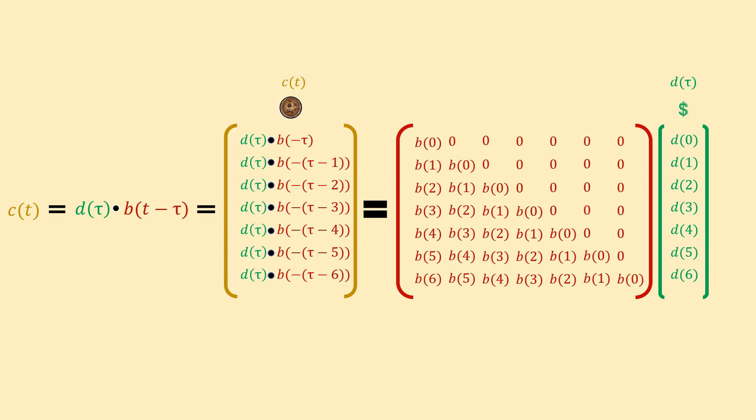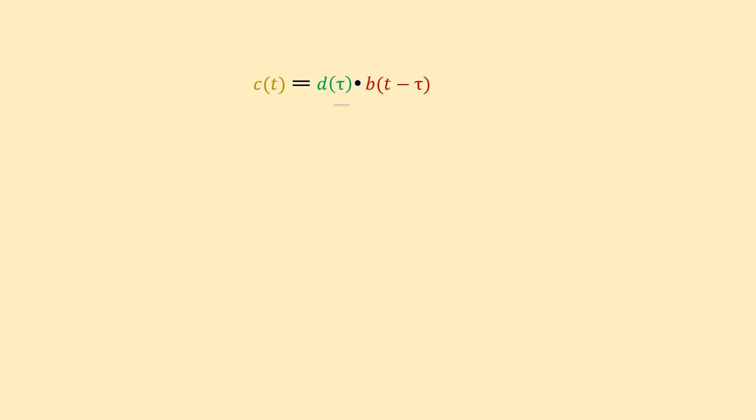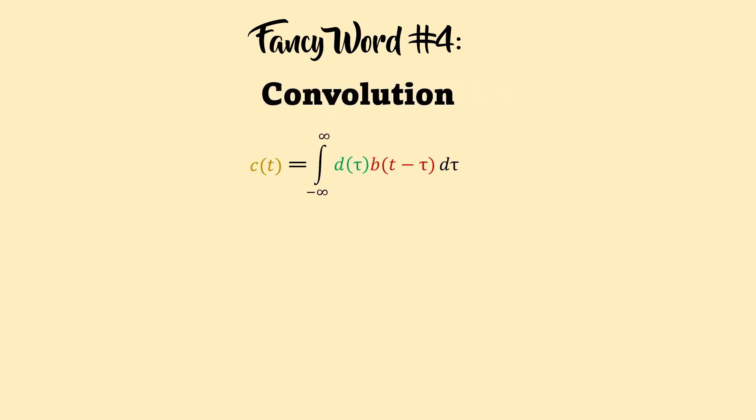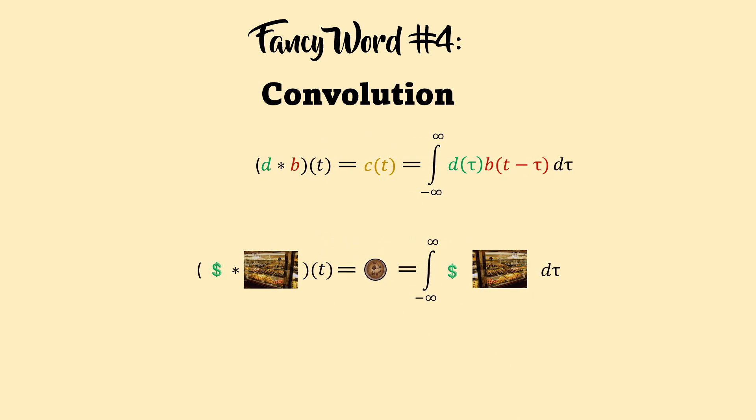Now we have a general expression of the output vector, which is a single dot product that is a function of the shift t. If we write out this dot product more explicitly with the sigma notation, this is what that expression would look like. And if we want to express this whole system with continuous functions, we can morph that sigma sum into an integral. Does this look familiar? This integral is called the convolution. We can use an asterisk to represent it as an operator between two functions.